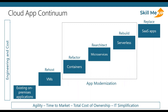On our journey to the cloud there are generally these five R's — the approaches we can take. We have our existing on-premise applications on the left, and on the right we have agility, time to market, total cost of ownership, and IT simplification. On the left we have engineering and cost time. At the very bottom is maintaining the status quo, stuck in the cycle of maintaining VMs on-prem. We want to start moving to the R's: re-hosting, refactoring, re-architecting, rebuilding, or replacing our applications.